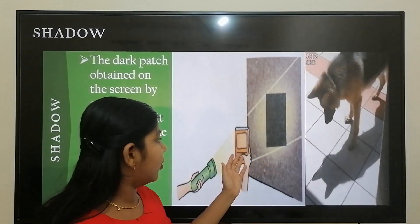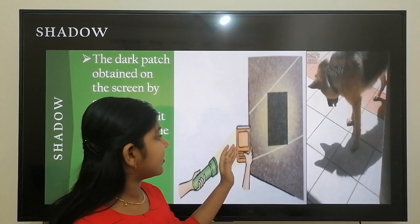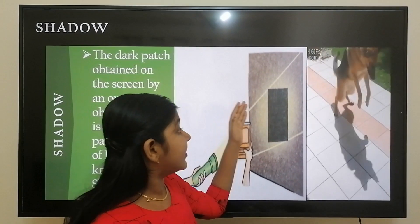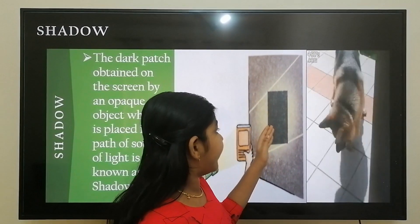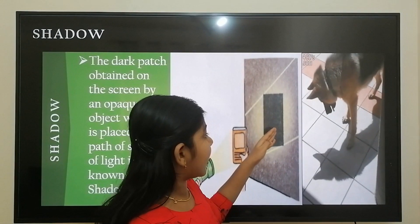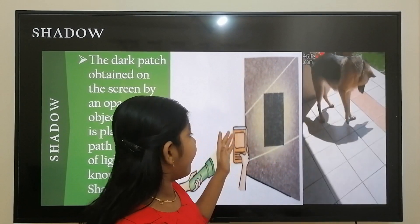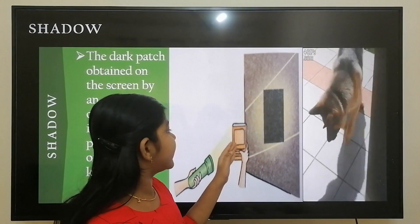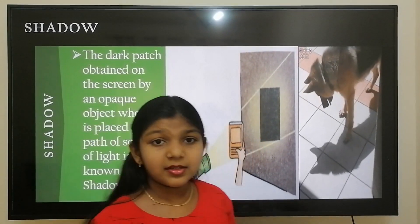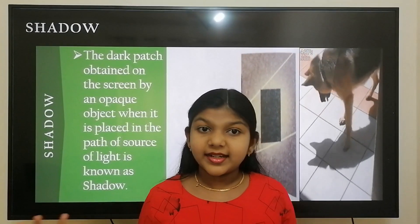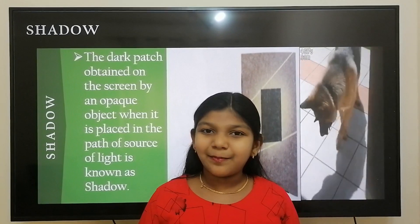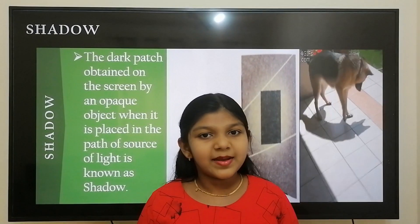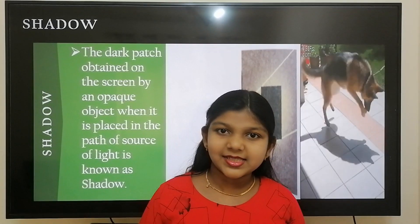Now hold a book on the path of light. The side of the book facing the torch gets illuminated, but a dark patch appears on the screen. This dark patch obtained on the screen by an opaque object, when it is placed in the path of a source of light, is known as a shadow.